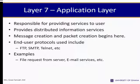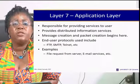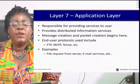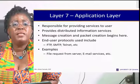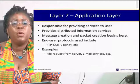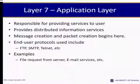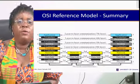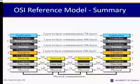Layer 7 is the application layer, responsible for providing services to users. It provides distributed information services, and message and packet creation begins here. End-user protocols include FTP, SMTP, and Ethernet. Examples of application layer services are file requests from a server and email services. A summary of the OSI reference model shows the layers from physical to application and illustrates where physical communications take place.